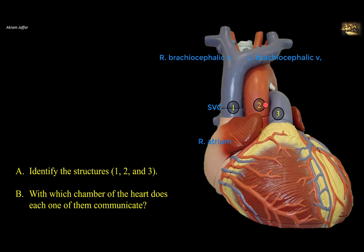Two is the ascending aorta, and you can see its continuity with the arch of the aorta. It arises from the left ventricle, which forms the left border of the heart. Three is the pulmonary trunk, and you can see its continuity with the right ventricle, which forms most of the anterior surface of the heart.